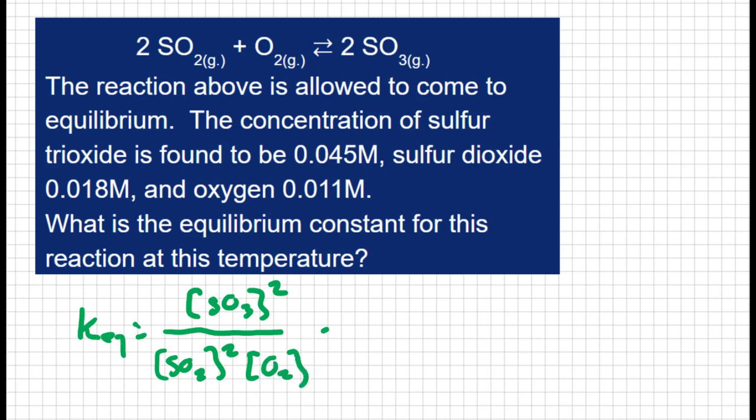And now I just have to plug in my values because I'm told we're at equilibrium. So my sulfur trioxide is 0.045 squared divided by my sulfur dioxide, which is 0.018 squared, times my oxygen, 0.011. And when I do this, I get 568, two sig figs. I could say 570 is my equilibrium constant.